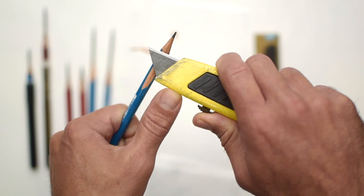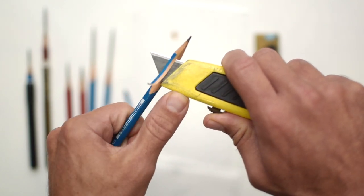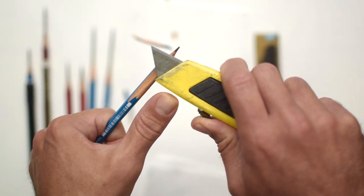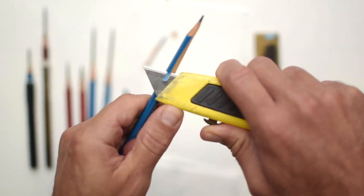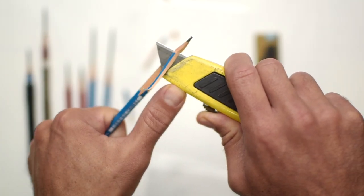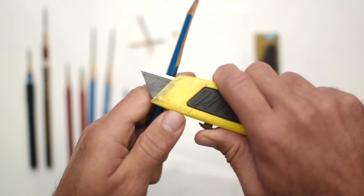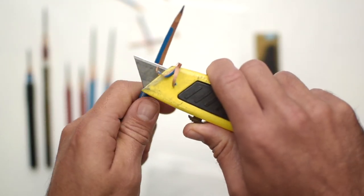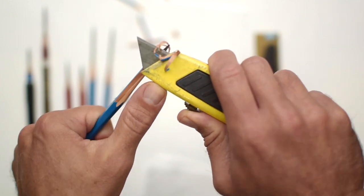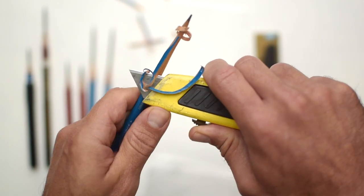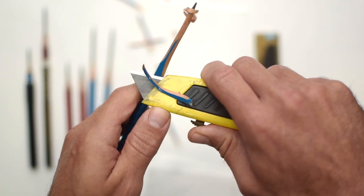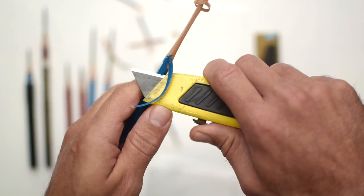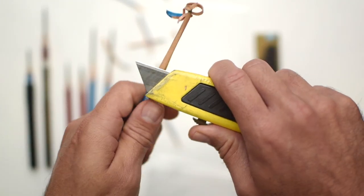So when you begin, carefully begin to remove the wood from around the shaft of the pencil. Every pencil that you get is going to be a little bit different. Sometimes you have pencils where the wood is really nice and soft and it comes off nice and easily. Other times the wood splinters and you get a lot of resistance from the pencil. Your knife also might not be very sharp.